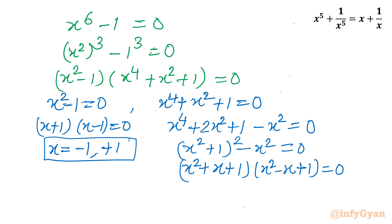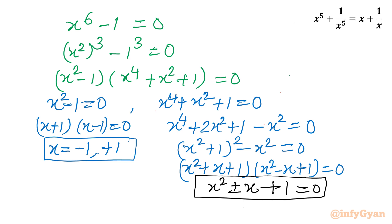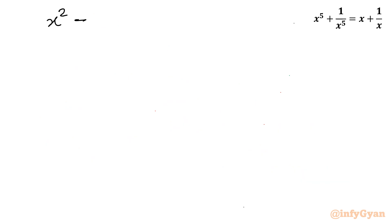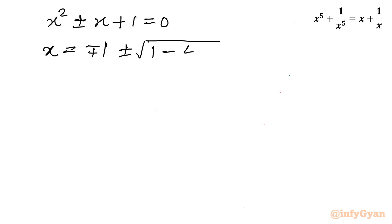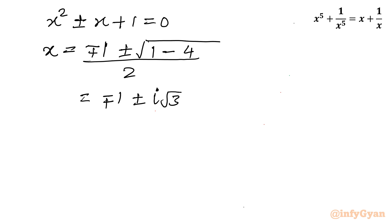We now have two quadratic equations: x square plus x plus 1 and x square minus x plus 1, which can be written together as x square plus or minus x plus 1 equal to 0. Solving with the quadratic formula gives x equal to (minus plus 1 plus minus square root of 1 minus 4) over 2, which is (minus plus 1 plus minus i root 3) over 2. So here we get four complex solutions.